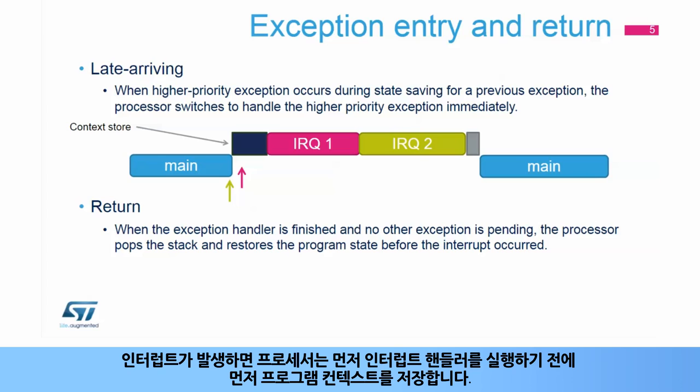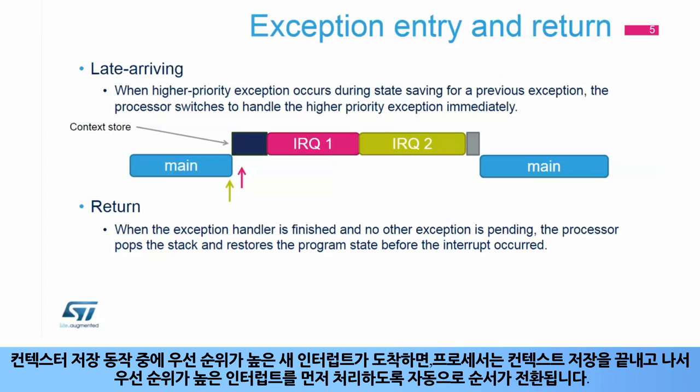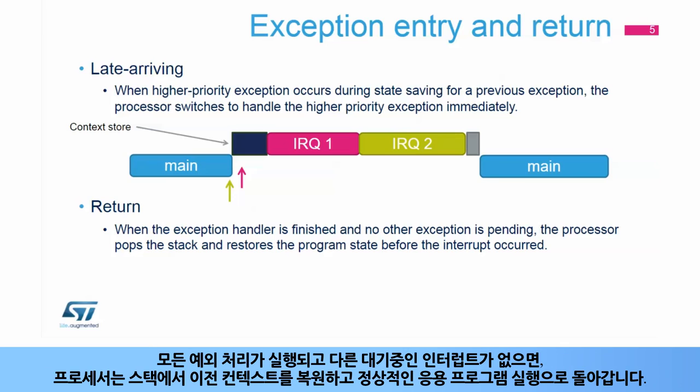When an interrupt arrives, the processor first saves the program context before executing the interrupt handler. If the processor is performing this context saving operation when an interrupt of higher priority arrives, the processor switches directly to handling the higher priority interrupt when it is finished saving program context.